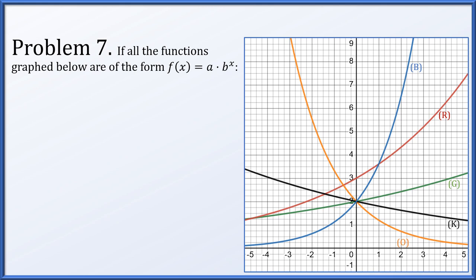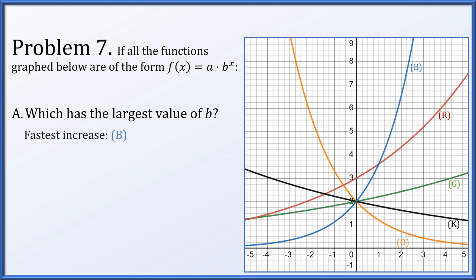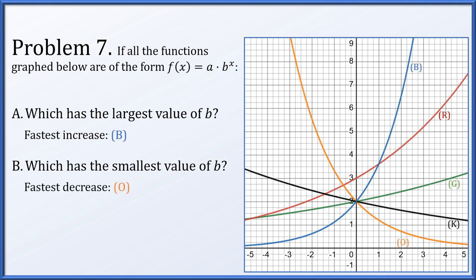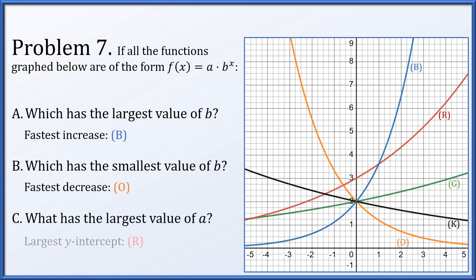In problem 7, all functions are of the form a·b^x. For which is b the largest? That's the one where the curve increases fastest — the blue curve. For which is b the smallest? We look for the fastest decreasing — the orange curve. For which is a the largest? A gives us the intercept, and the largest intercept belongs to the red curve.